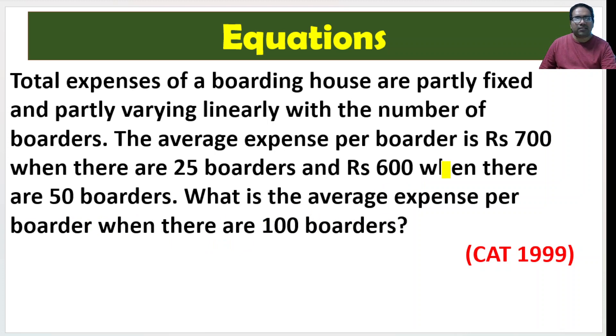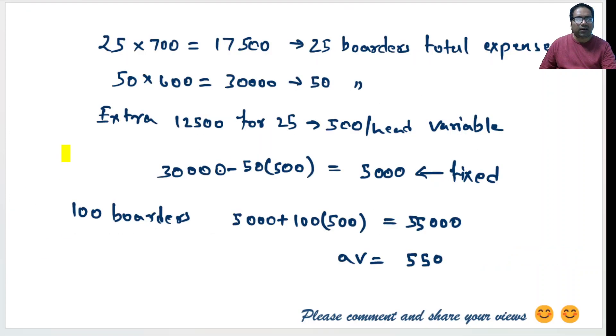Here it is partly fixed and part variable. When there are 25 people, average is 700. What does that mean? What is the total expense? 25 into 700 which is 17,500.